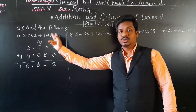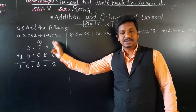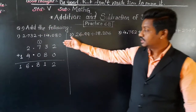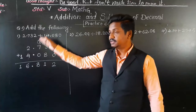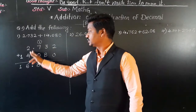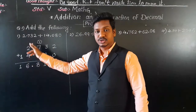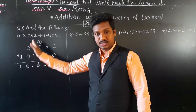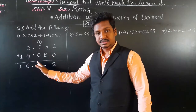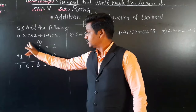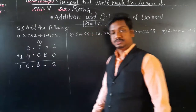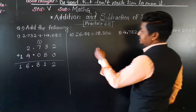To summarize what we have done: first, we converted them into like decimals by putting zeros wherever necessary. Then we arranged them vertically. While arranging vertically, the decimal point should come exactly below each other — in one line, one column. And accordingly, we write each digit below the corresponding digit.